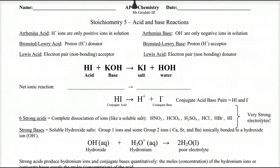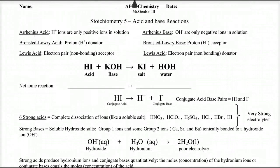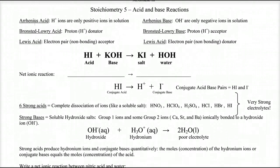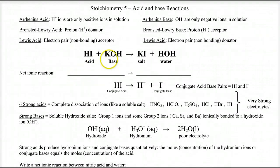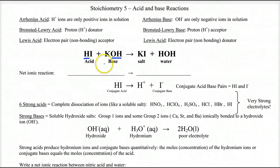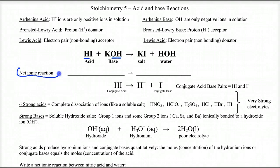Identifying an acid-base reaction starts with identifying an acid or a base. Acids generally give off or are written with an H in front — at least the Arrhenius acids are — and an Arrhenius base is written with a hydroxide. What we have to do with these reactions is be able to write net ionic reactions.